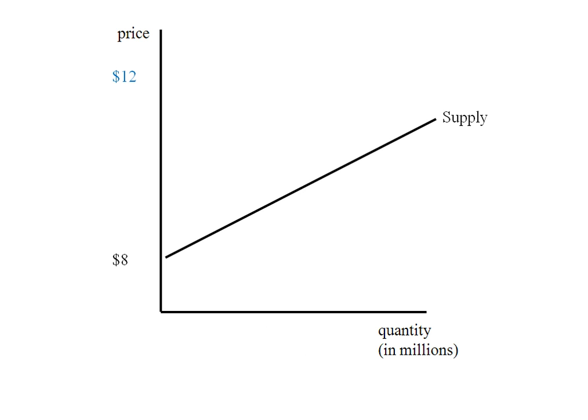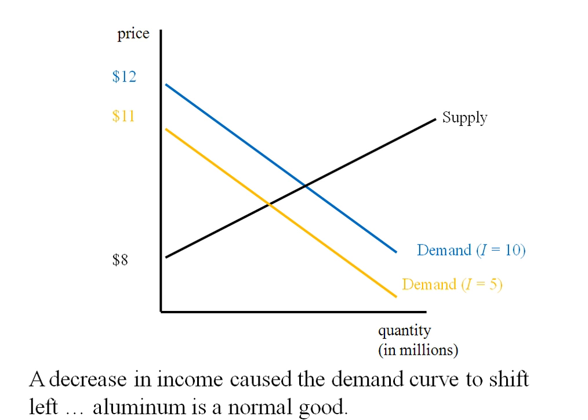Back to my graph, I indicate $12, a downward sloping demand curve labeled with income of $10,000. I write on $11, downward sloping demand, and indicate income of $5,000. What we see is when income fell from $10,000 to $5,000, we had a leftward shift in the demand curve. This means aluminum must be a normal good—demand decreased when our income decreased.